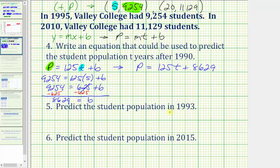On number five, we're asked to predict the student population in 1993. Using the equation that we just found, because 1993 is three years after 1990, we evaluate our equation when t equals 3. If we have a hard time determining the value of t to use, we can always take the desired year, 1993, and subtract the base year 1990. Notice how this equals positive 3. So we need to find the value of p when t equals 3. So p equals 125 times 3 plus 8629, which equals 375 plus 8629, which gives us 9004 students.